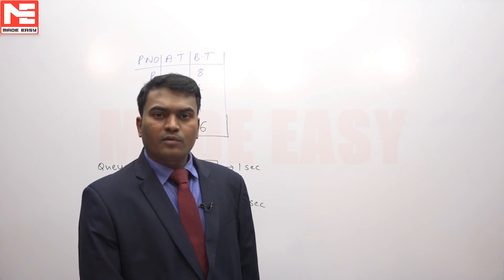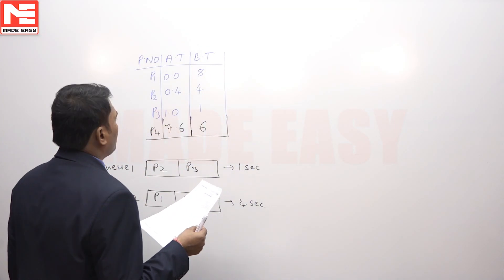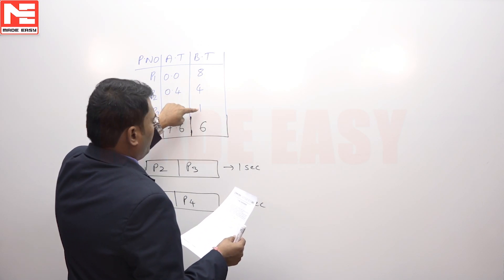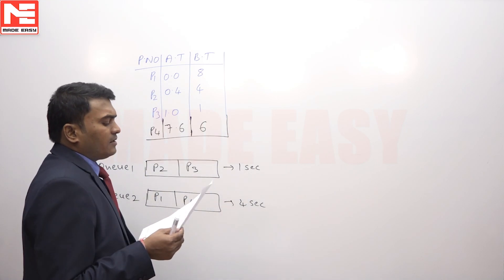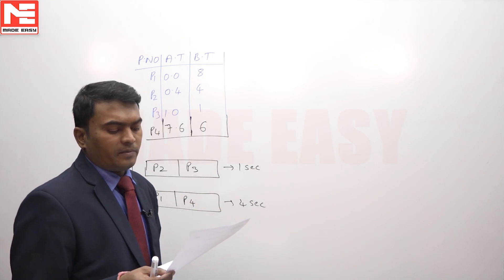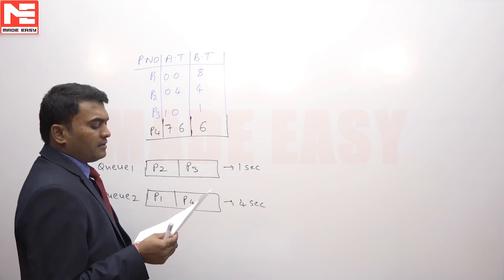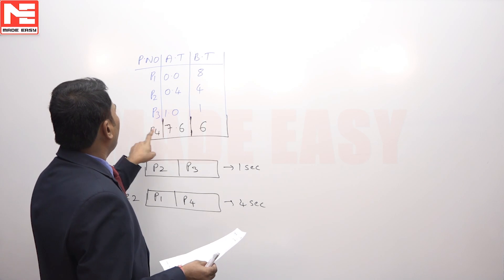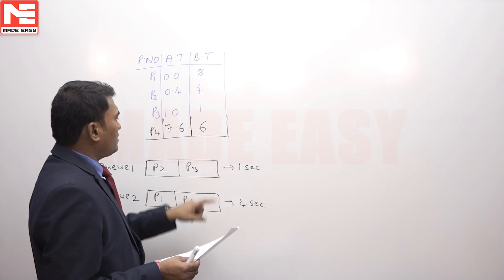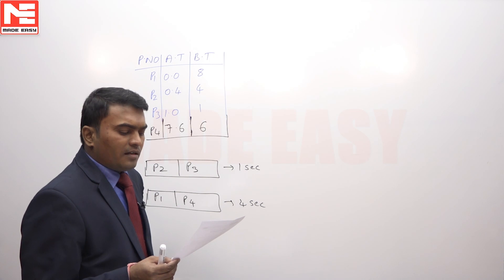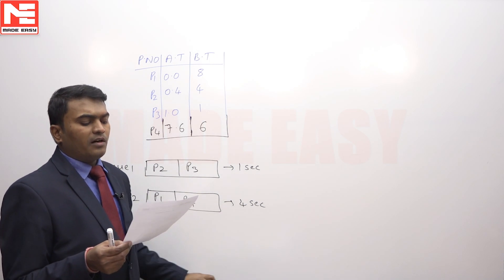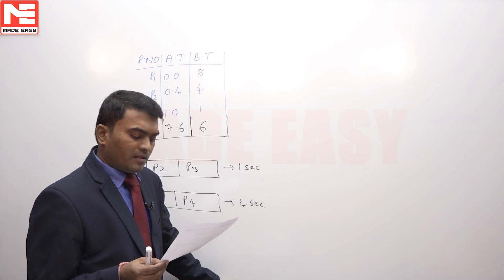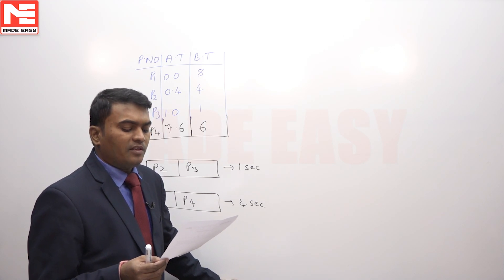In this question, he has given 4 processes P1, P2, P3, and P4, and their arrival times and burst times are 8, 4, 1. The 4th process P4 enters the system at 7.6 seconds and needs 6 seconds of CPU. He is using a modified multi-level queue scheduling: the first queue has P2 and P3, and the second queue has P1 and P4.